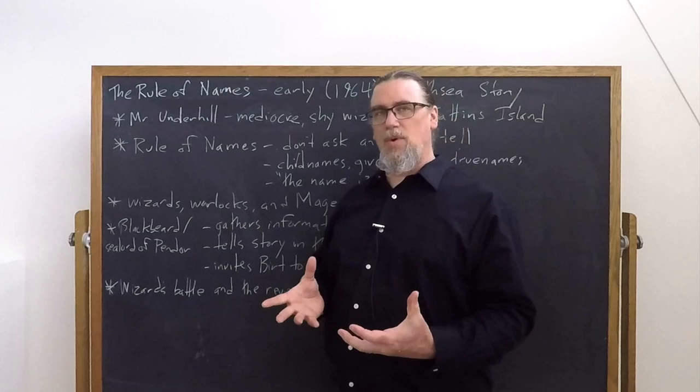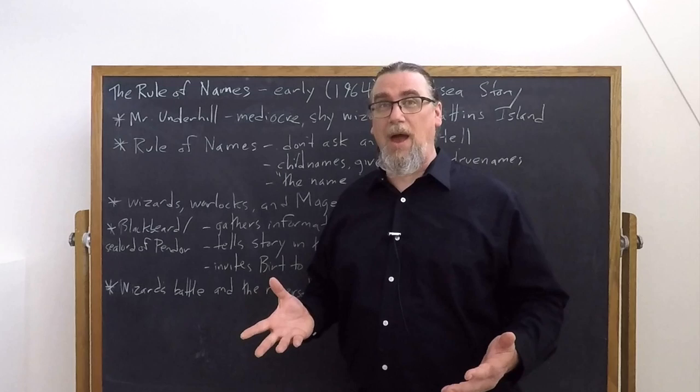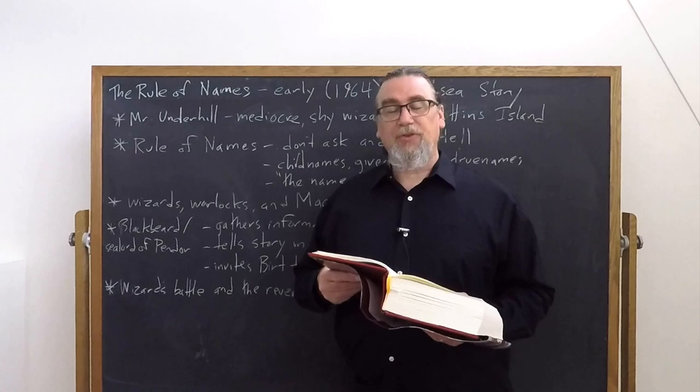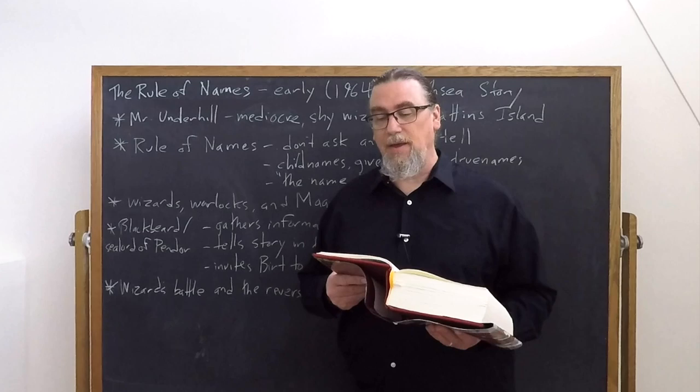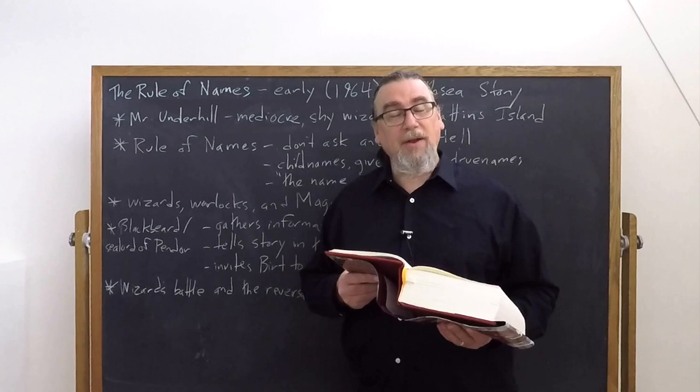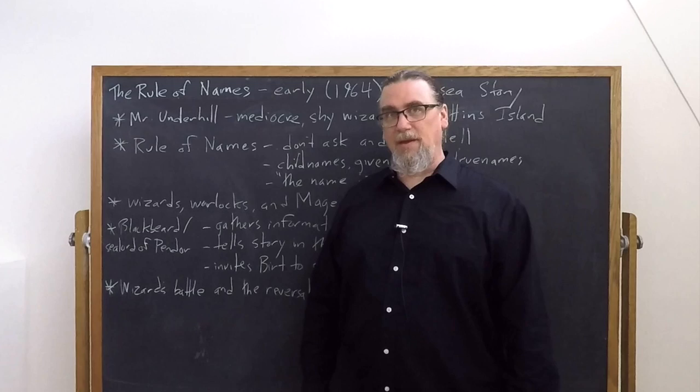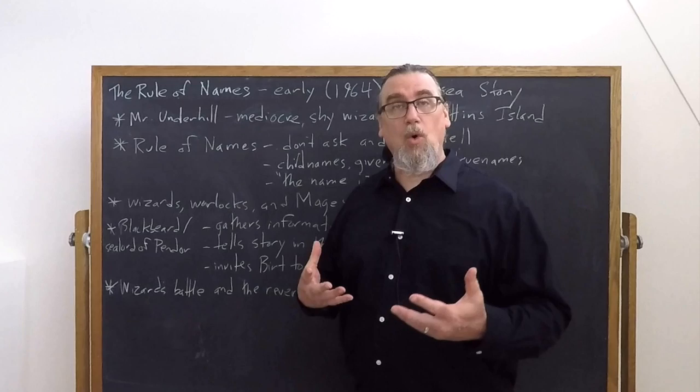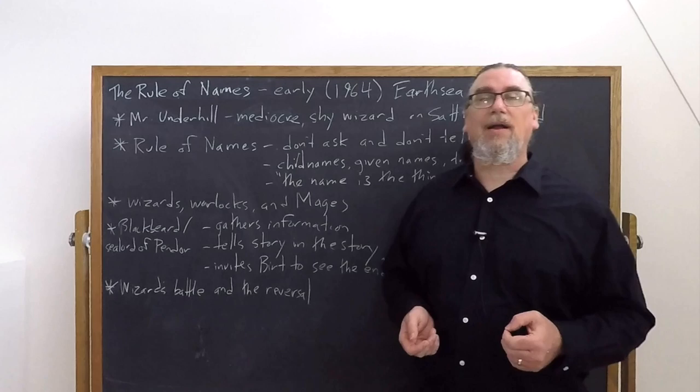This is where we get to the real rule of names. There are these external rules governing behavior, and then there is the deeper reality governing not just names but things and power and magic—that is the reason, the cause, the why behind all of this. Mr. Underhill reveals this: 'Because the name is the thing,' he said in his shy, soft, husky voice. 'And the true name is the true thing. To speak the name is to control the thing. Am I right, school mistress?' And that is the correct answer that's being given to the children.